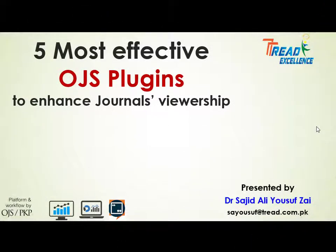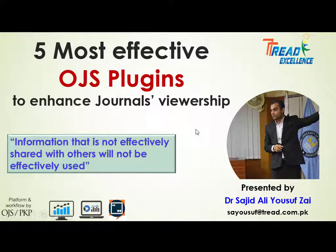Hi everyone. In this video I'll talk about five most effective OJS plugins to enhance journal viewership. The purpose of a research journal is to provide quality research papers and produce information that researchers and policy makers can use. As one quotation states, information that is not effectively shared with others will not be effectively used. The purpose of this video is to provide the five most effective OJS plugins for journal editors.